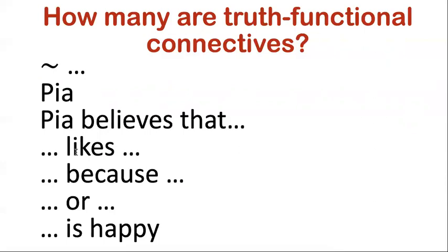Pause your video now because I really want you to think through this — it's an important concept. All right, let's consider the first one: is negation truth functional? Yes, I've already told you the Boolean connectives are truth functional and negation is a Boolean connective. Is 'Pia' a truth functional connective? No — we said in the last video this isn't even a connective. Is 'Pia believes that...' truth functional? No — Pia's not omniscient either, so just knowing the truth value of the input does not tell you whether Pia believes it or not.